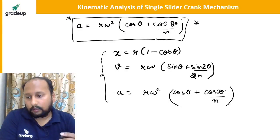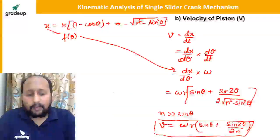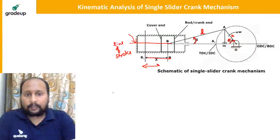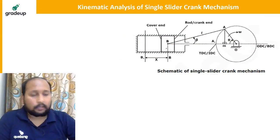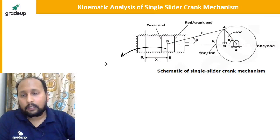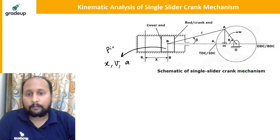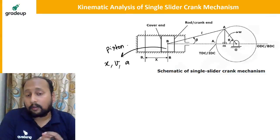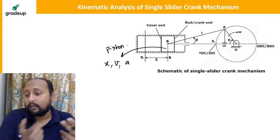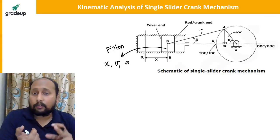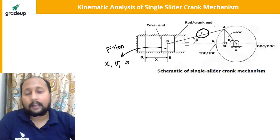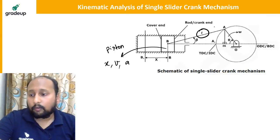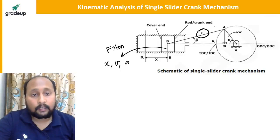Now we have discussed all three parameters of the piston. Next, let's discuss the connecting rod, because unlike the piston which has only translational motion, the connecting rod will have angular motion. So let's find the angular motion of the connecting rod.